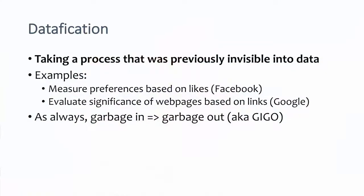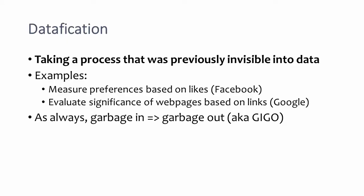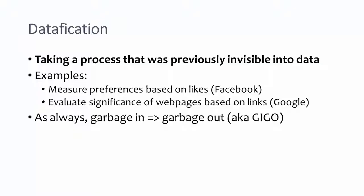Now let's talk about datafication — taking a process that was previously invisible and turning it into data. For example, Facebook likes allow us to measure preferences by quantifying them. And if you look at Google, every page is associated with a weight, like Google's PageRank algorithm, where you evaluate the significance of web pages based on links.